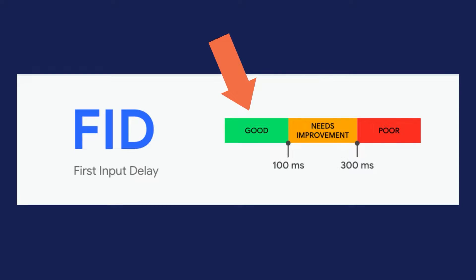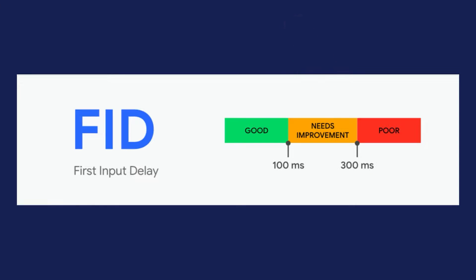In this video, we're going to go over the ways that you can improve your first input delay. A good FID score needs to have a first input delay of less than or equal to 100 milliseconds. You will get a score of needs improvement if it's between 100 and 300 milliseconds, and a poor score is beyond 300 milliseconds. So let's go over how you can fix that in today's video.